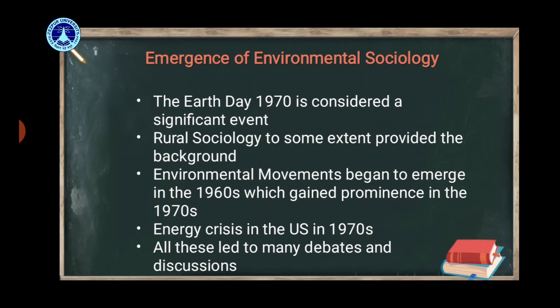Does this mean there was a complete absence of environmental dimension in sociology prior to the 1970s? Well, the answer is no. Even in the works of the classical sociologists — be it Durkheim, Weber, or Marx — there were some traces of societal-environmental relations, but it was more implied than direct. There were also works by later sociologists on the environment, yet it was only after the inauguration of Earth Day that environmental sociology emerged as a discipline within sociology. We also need to understand that rural sociology to some extent provided the background for environmental sociology, as works on the environment appeared from time to time in the field of rural sociology.